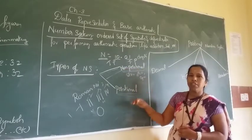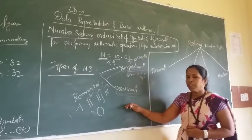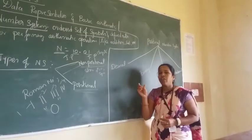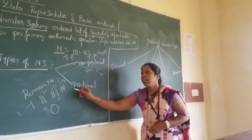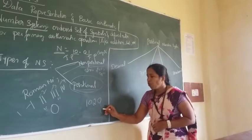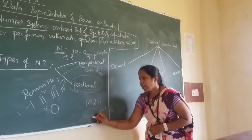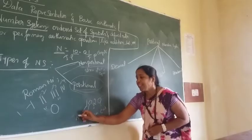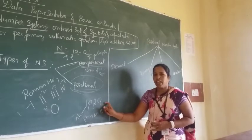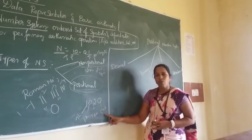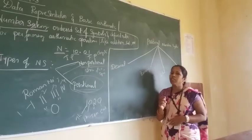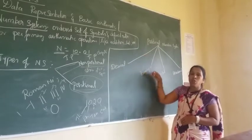So we have two types: non-positional and positional number system. In the positional number system, the value of a digit is identified by the position it occupies. For example, in the number 1020: 0 is in the ones place, 2 is in the tens place, 0 is in the hundreds place, and 1 is in the thousands place. The positional number system is further broadly classified into 4 types.